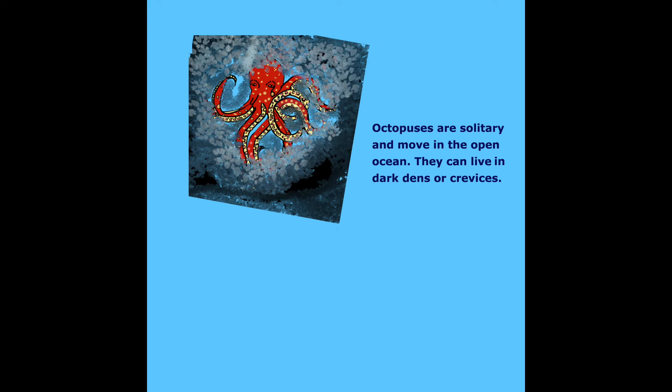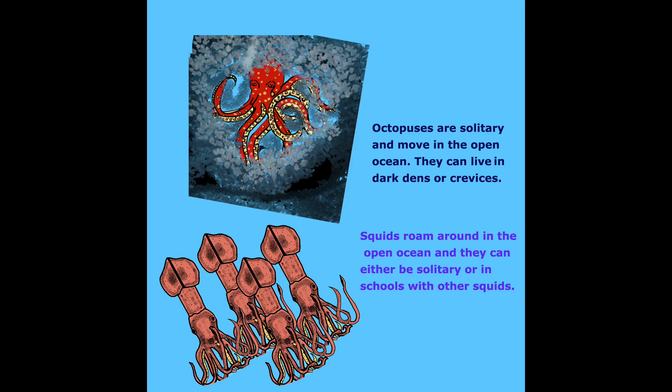Octopuses are solitary and can live in dark dens or crevices. Squids roam around in the open ocean and can be either solitary or in schools with other squids.